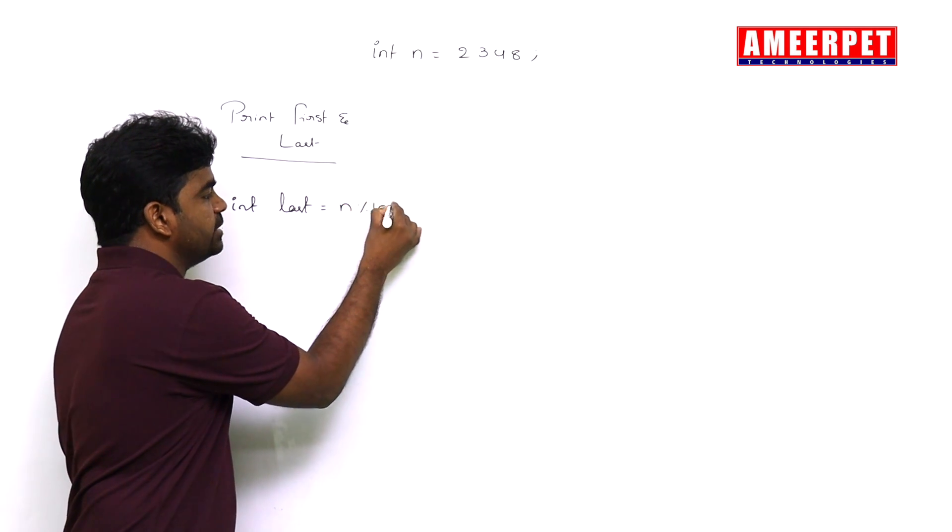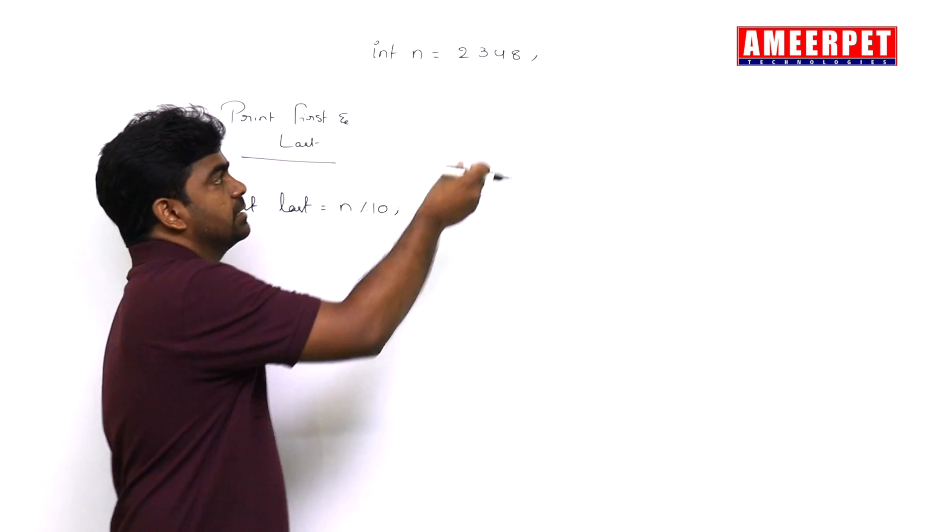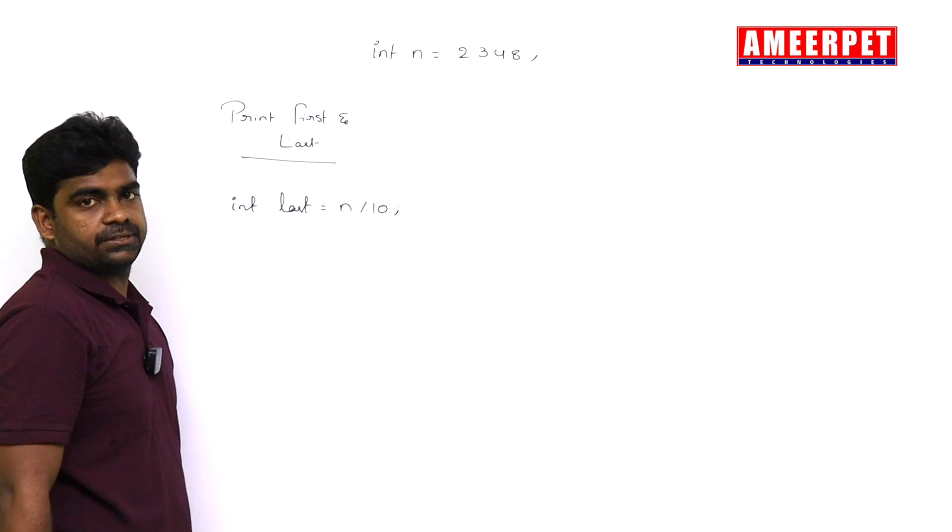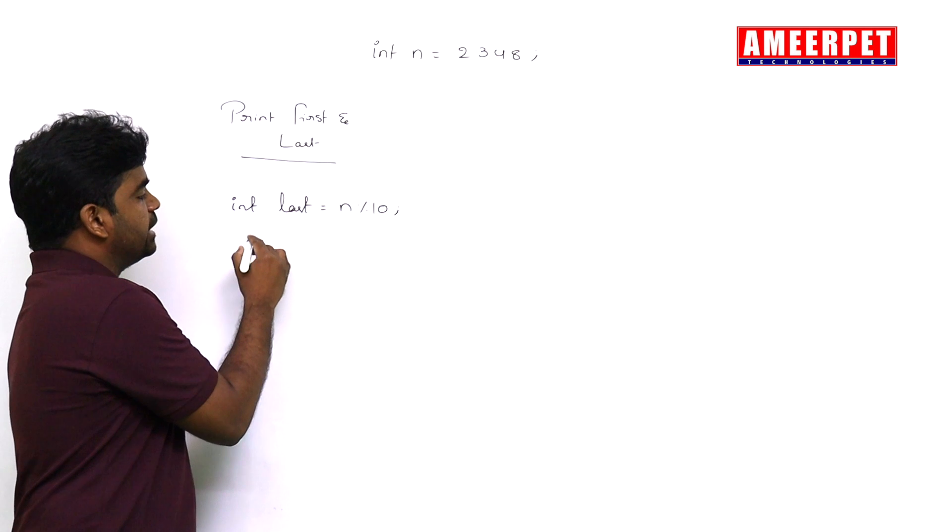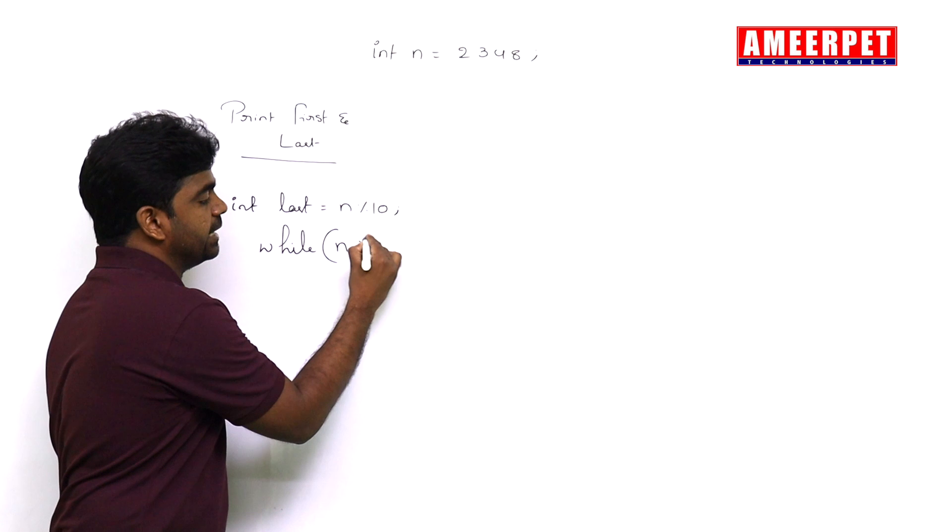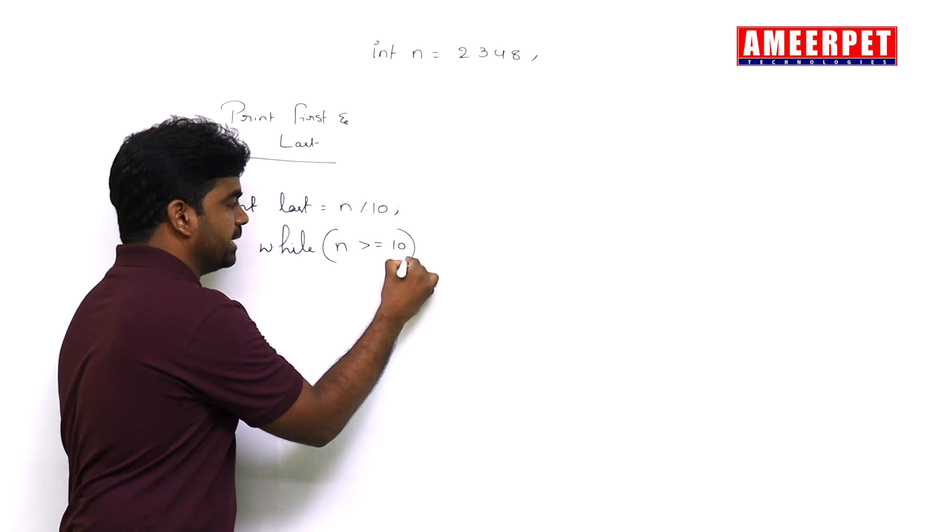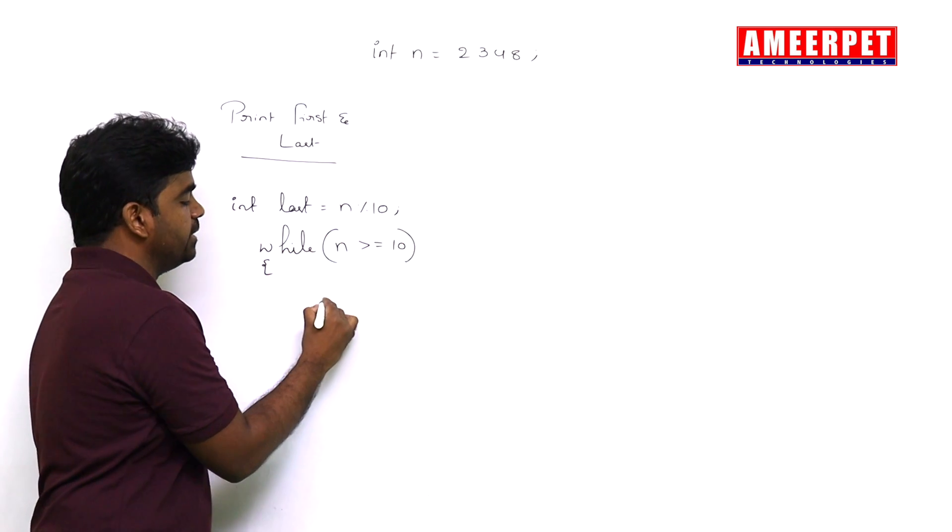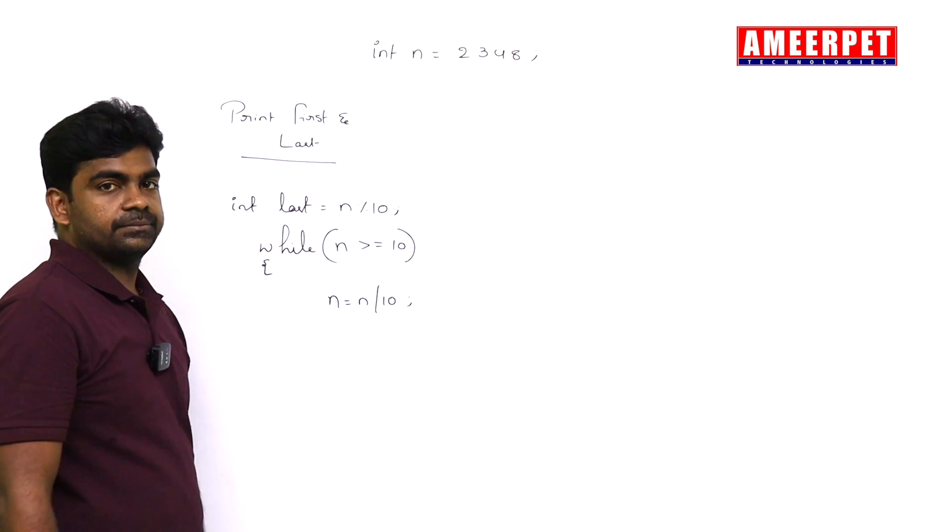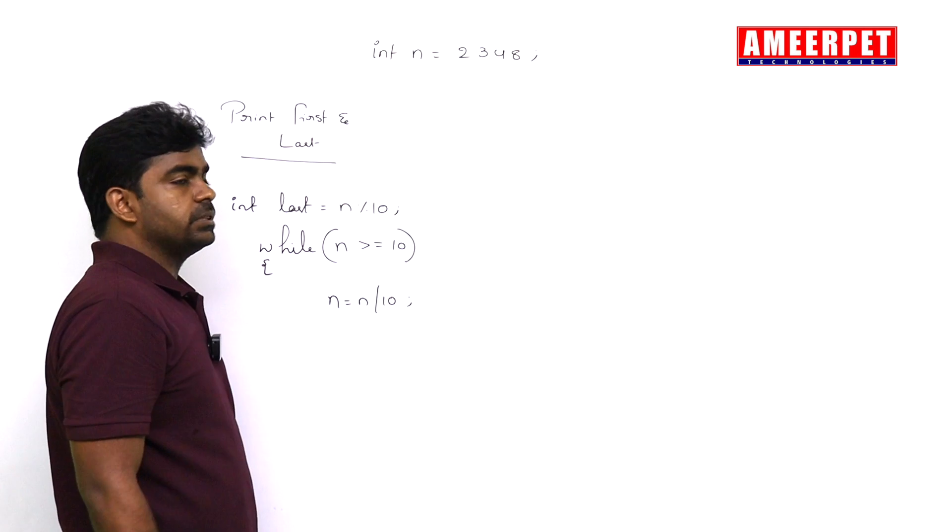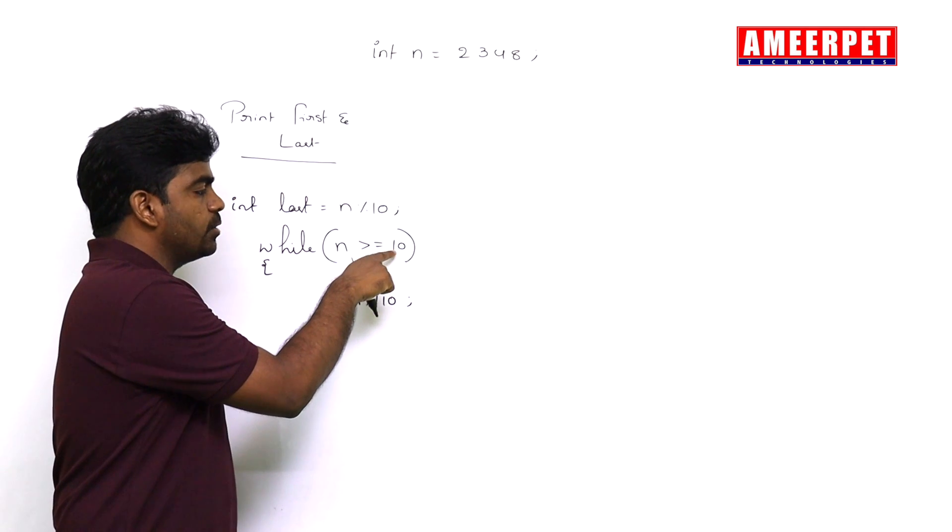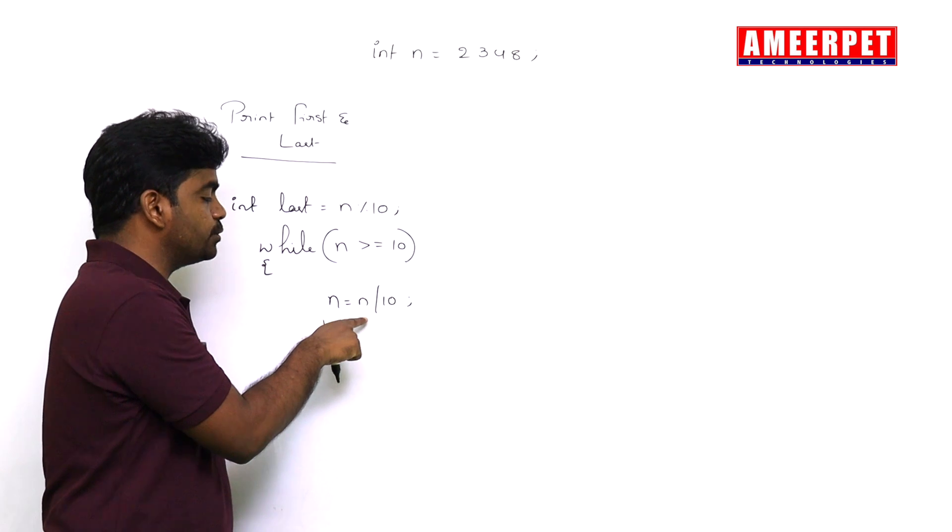The last digit: whenever you perform the mod operation, it always comes from the last, which is 8, and will store into last. Then we keep on repeating the loop condition n is greater than or equals to 10, until we remove one by one. N equals to n divided by 10.